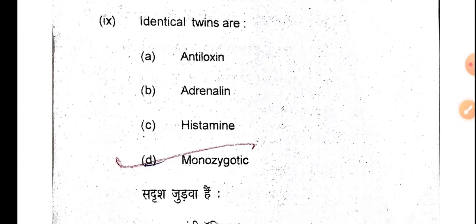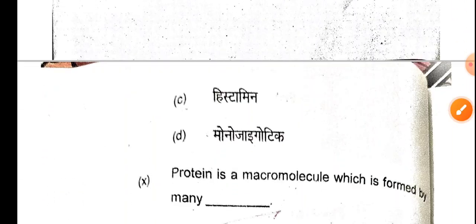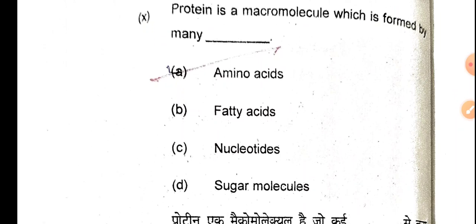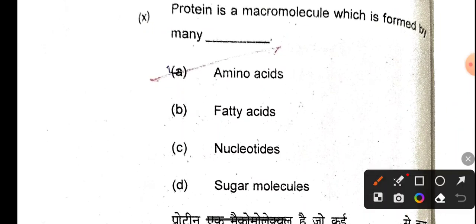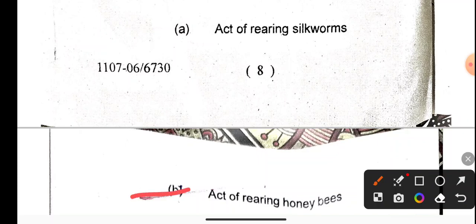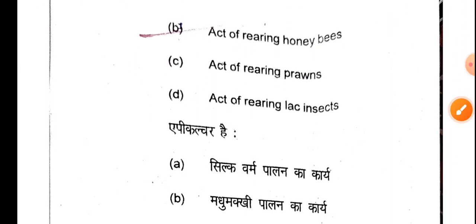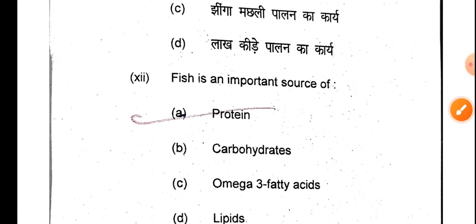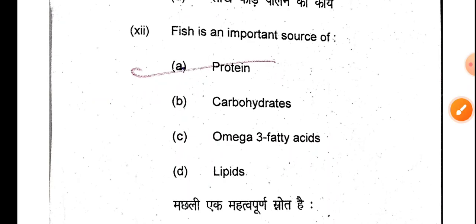Identical twins are monozygotic. Protein is a macromolecule formed by the combination of many amino acids. Apiculture is the act of rearing of honeybees. Sericulture is the rearing of silkworms, prawn culture is for prawns, and lac culture is for lac insects.